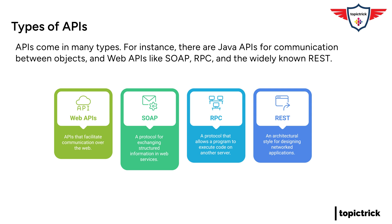Are there any other big ones we should know about? Yes, there's also RPC, which stands for Remote Procedure Call. RPC is a way for a program to execute code on a remote server. There are a few different flavors of RPC, such as XML-RPC and JSON-RPC. As their names suggest, they use XML and JSON respectively for data formatting. Data formatting is a key aspect of how APIs work.